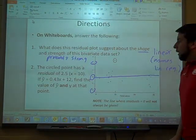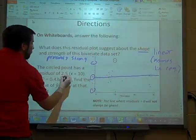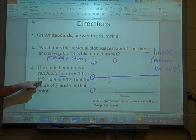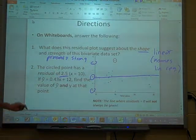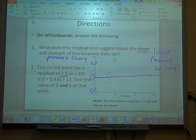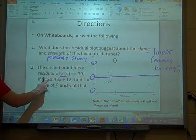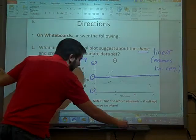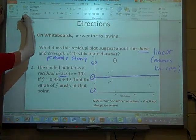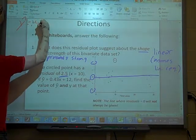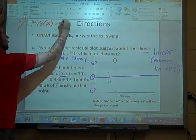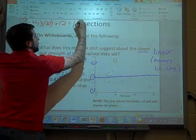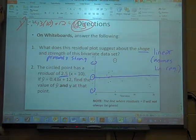Number two, the circled data point has a residual of 2.5. And the x value, right down here, the x value is 10. So if this is the regression equation, you're going to find the value of y hat and y at that point. So first of all, y hat, well, we just use the equation, right? We know x is 10. So actually, I'll do this above so you can see a little better. So y hat would be 0.43 times 10 plus 12. 10 times 0.43 is 4.3 plus 12. That would be 16.3. That's y hat.